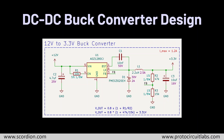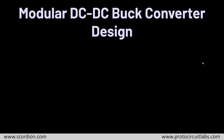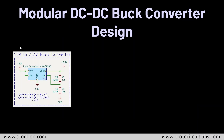Here is a KiCad design copied from the typical application in the datasheet, but this is not a modular design. When we copy this design and paste it somewhere else, if we need to change R1 we need to change both instances. I need to make sure that when I copy a block of the circuit and paste it elsewhere, the base components stay the same, and changing one value updates it everywhere. For this reason we need to use a hierarchical sheet.